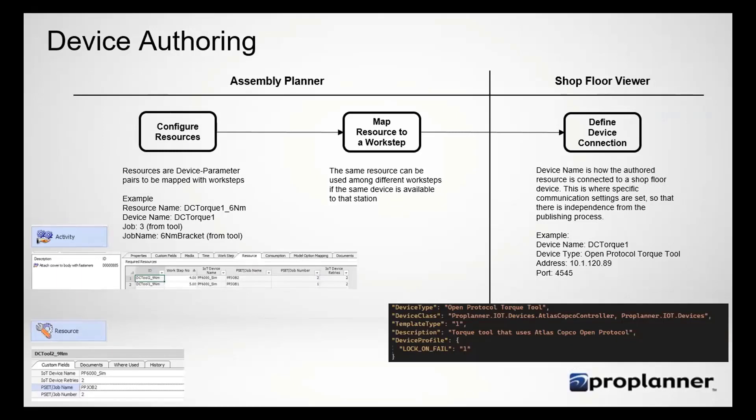Now let's talk a little bit about specifically devices. I'm drilling down, talking about just industrial Internet of Things. So how do we do this? Well, on the left you have Assembly Planner, that's process offering. On the right, of course, Shop Floor Viewer, which is our MES environment for which the tools are communicating.